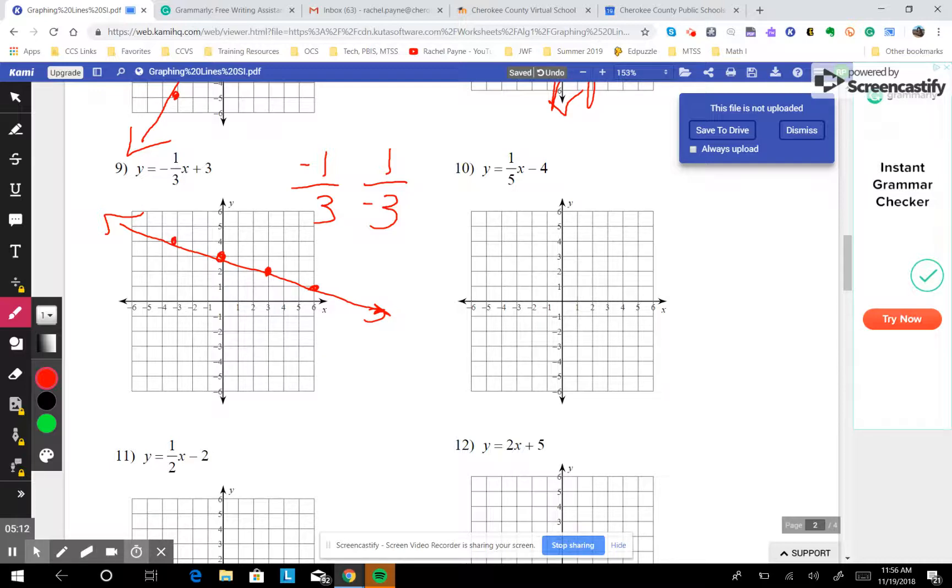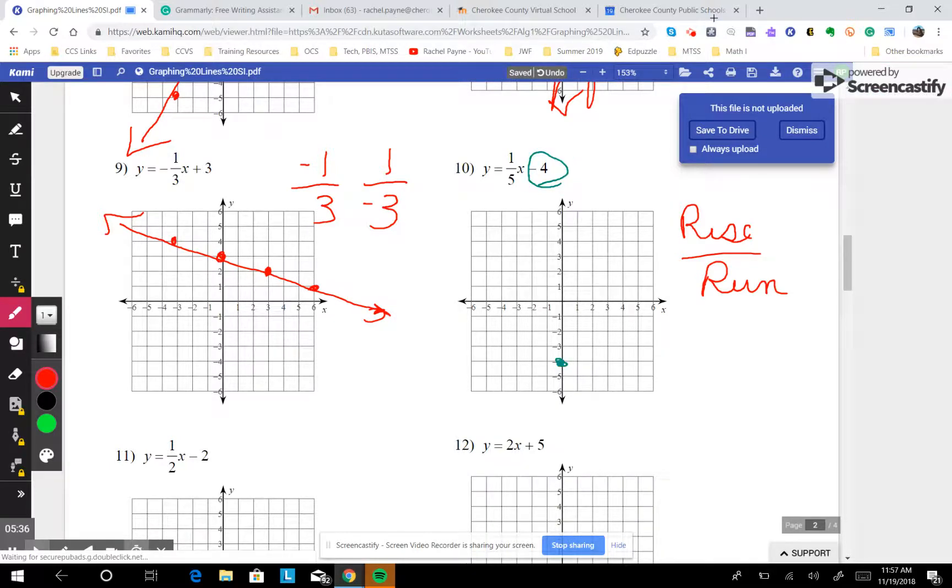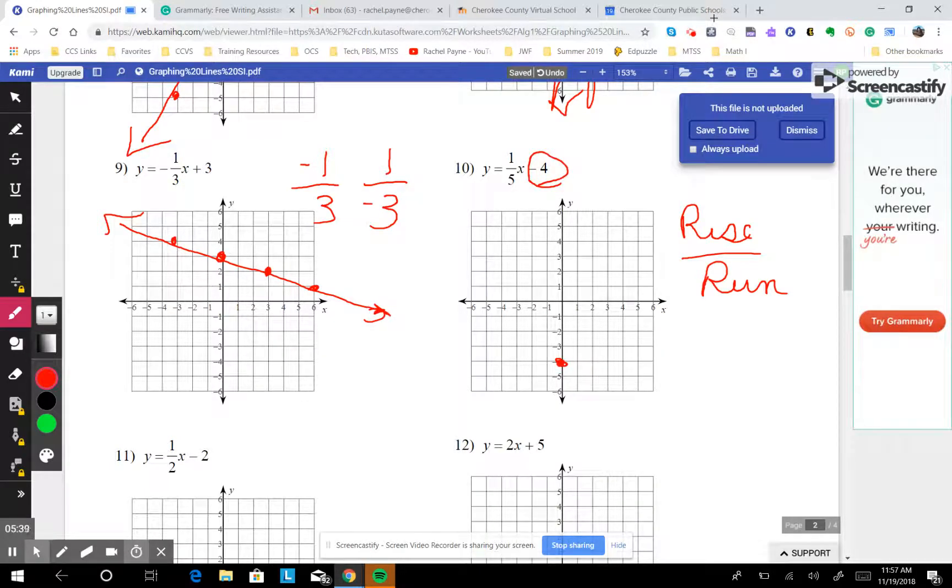And then this one. Begin at what? We begin at negative 4. So begin at negative 4. And then we rise how much? Remember, it's always rise over run. So rise 1, run 5. Rise 1, run 5. There's our line.